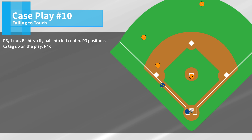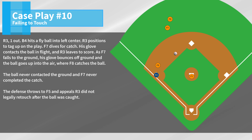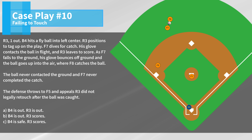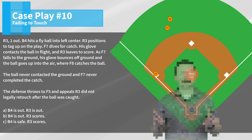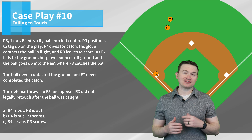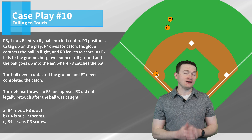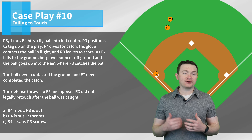Case play ten: R3, one out. B4 hits a fly ball into left center. R3 positions for the tag up. F7 dives for the catch — his glove contacts the ball in flight, and R3 leaves to score. As F7 falls to the ground, his glove bounces off the ground and the ball goes up into the air where F8 catches it. The ball never contacted the ground and F7 never completed the catch. The defense throws to F5 and appeals R3 did not legally retouch after the ball was caught. The correct answer is B — B4 is out and R3 scores. The batter is out on the caught fly ball, but the runner is safe having legally retouched. Remember, the requirement is not that the runner retouch after the ball is caught — it's simply that they retouch after the ball is touched by a fielder. Since the ball was originally touched by F7, R3's advance is going to count.